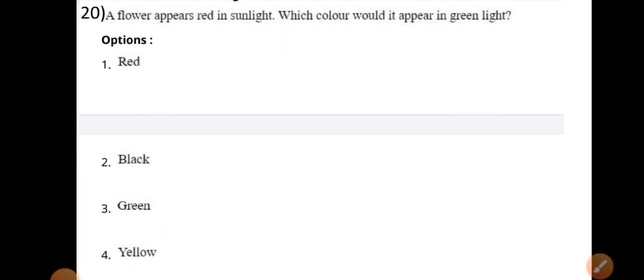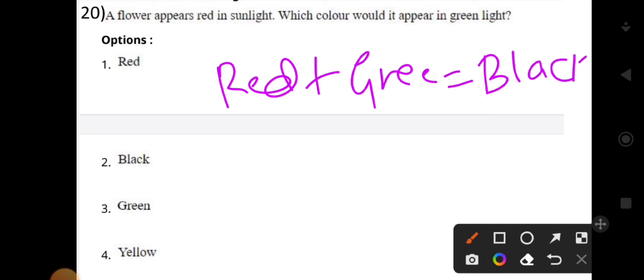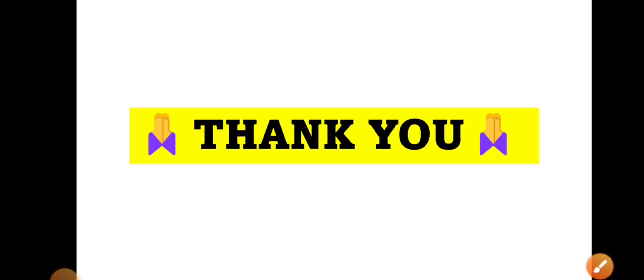Last question. A flower appears red in sunlight. Which color would it appear in green light? In green light, it will appear black.